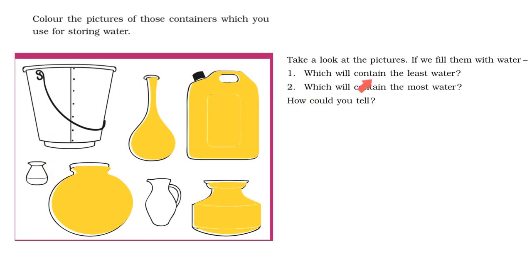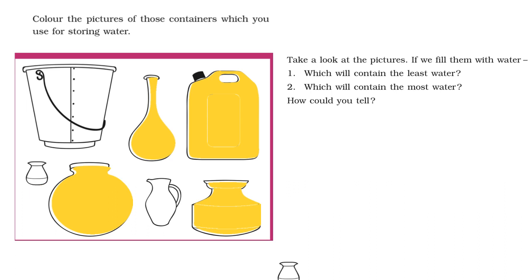Take a look at the pictures. If we fill them with water, which will contain the least water? We know that least means minimum, so the container that is very small will have the least water. The small pot will contain the least water.